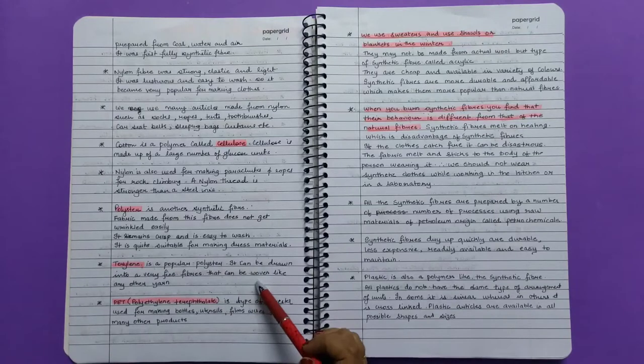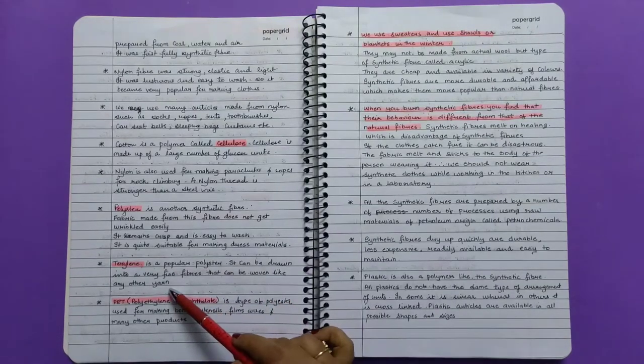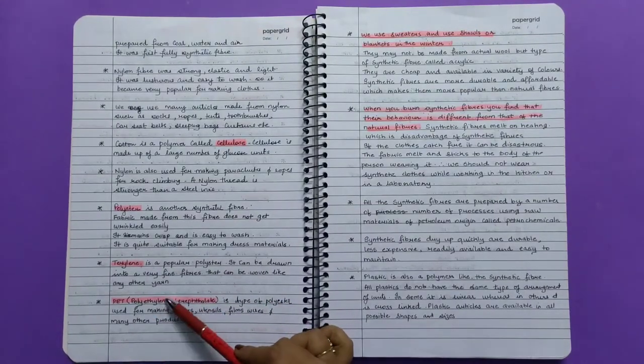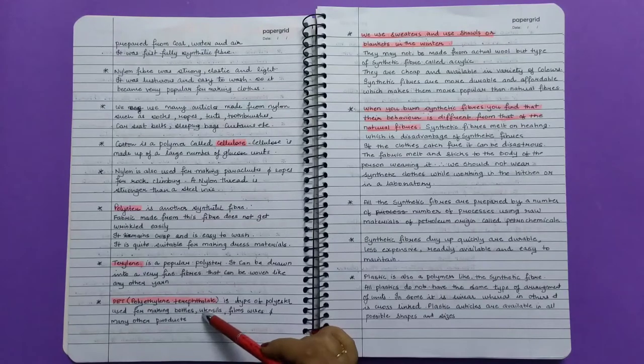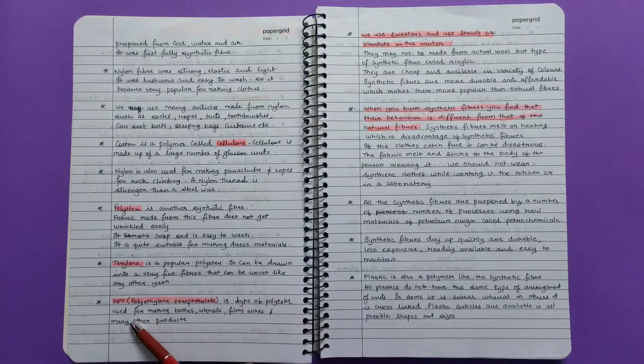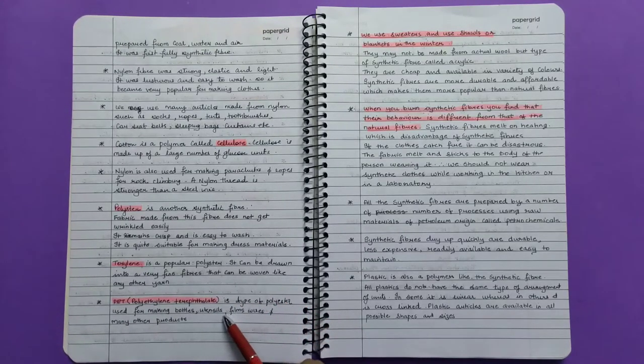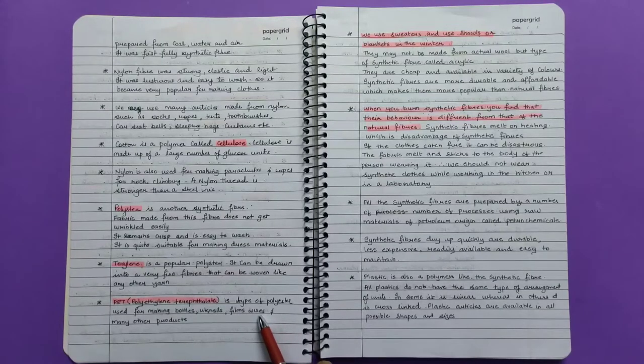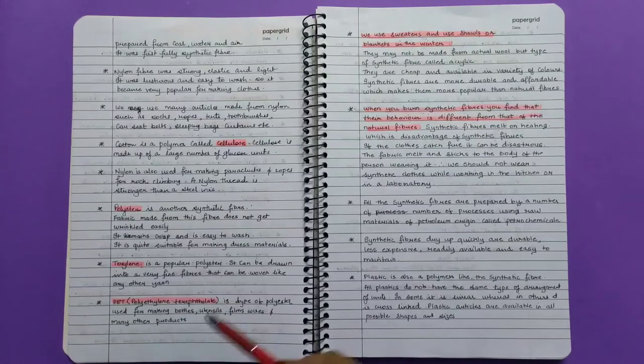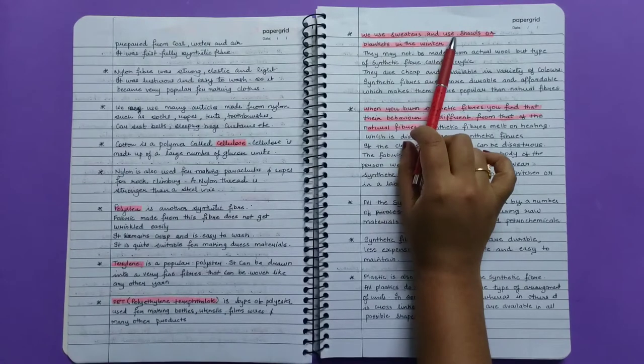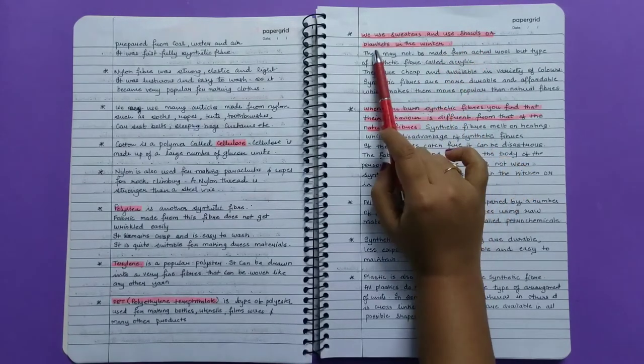PET (polyethylene terephthalate) is a type of polyester used for making bottles, utensils, films, wires, and many other products. We use sweaters and shawls or blankets in the winter because they may not be made from actual wool but from a type of synthetic fiber.